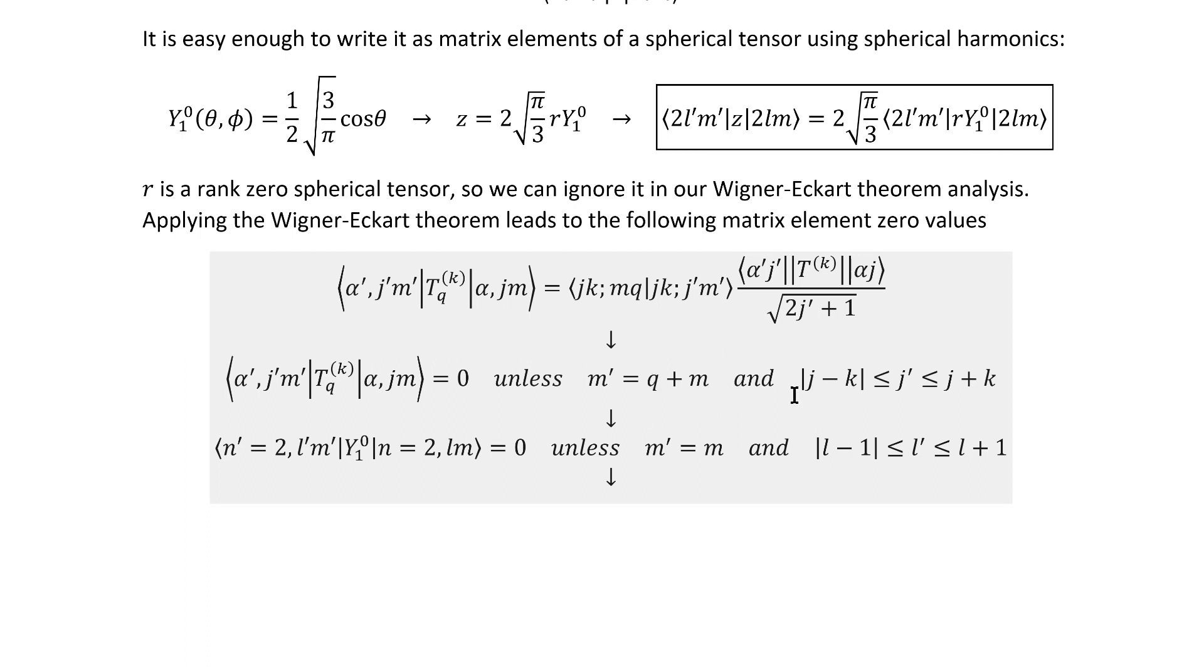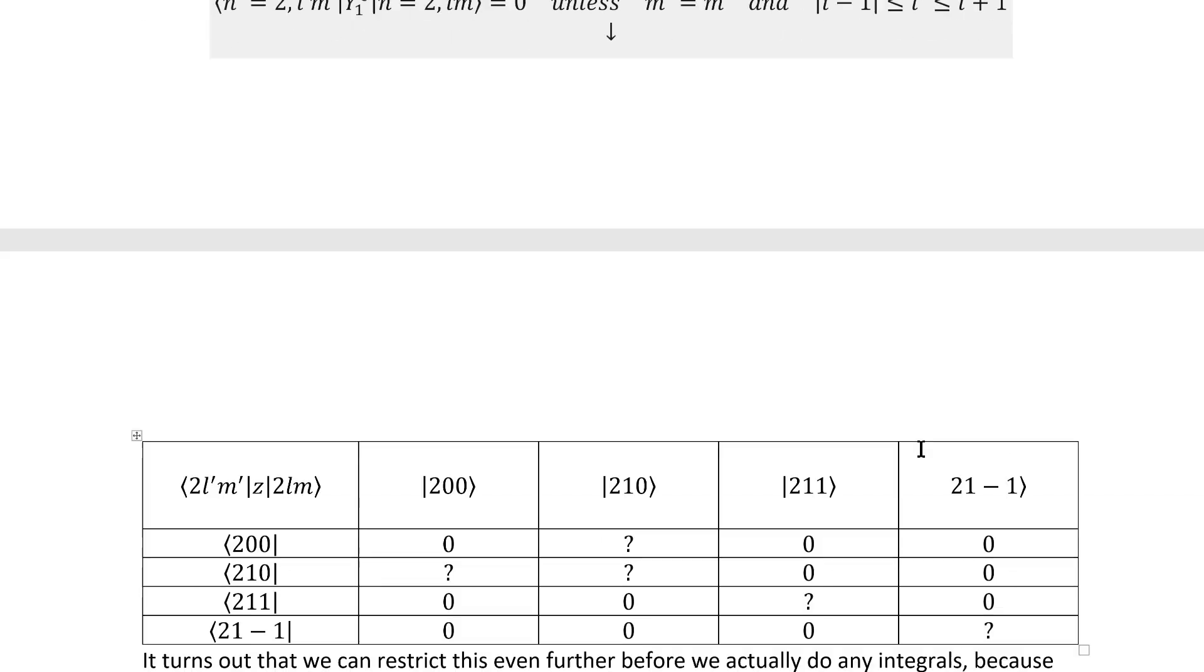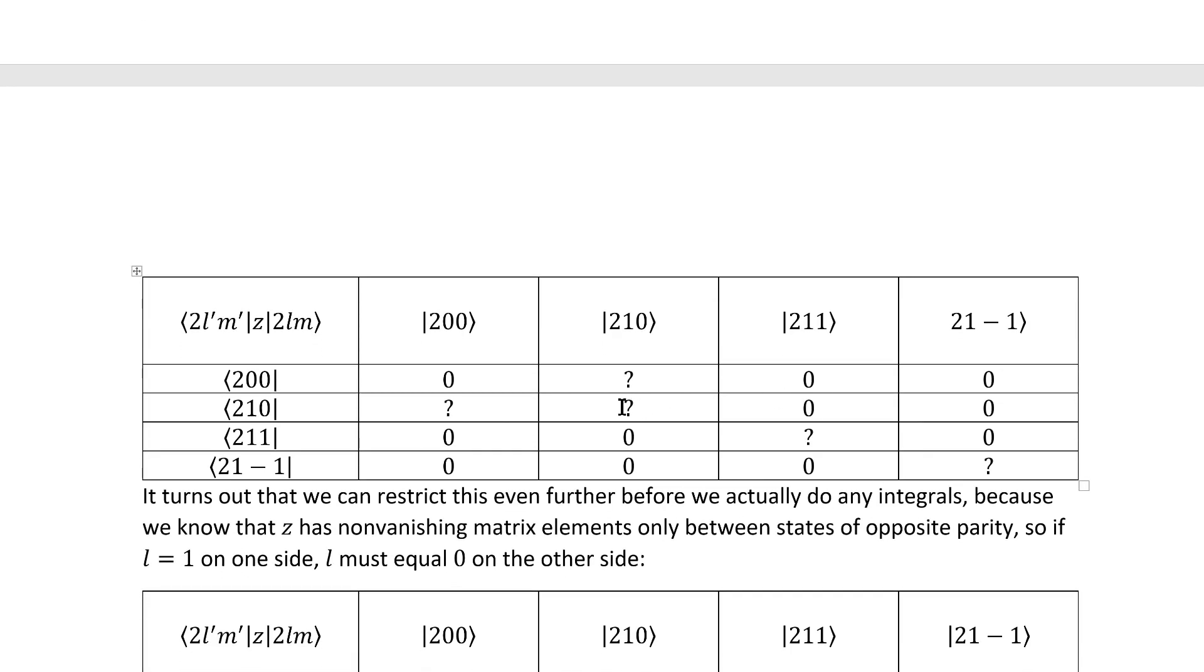If we apply our special case to these general selection rules, we arrive at these specific ones. Those immediately zero out most of the elements in the matrix that we need to evaluate, but it does leave five left over that satisfy all those selection rules.